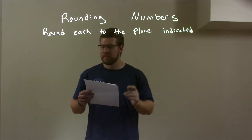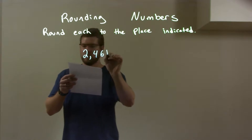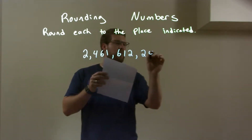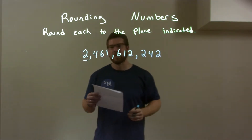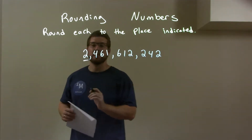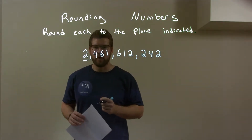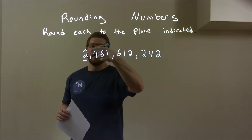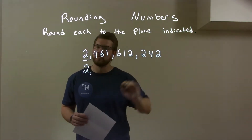So if I was given this number, 2, 4, 6, 1, 6, 1, 2, 2, 4, 2, and we are rounding at this first 2 — I kind of ignore everything else. I just look at this 2 and the number just to the right of it. Well, the number just to the right is a 4. Since that 4 is between 0 and 4, we round downwards, keeping this 2 the same and the rest just becomes 0.